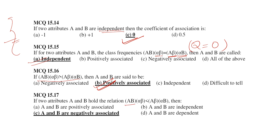If AB × αβ is less than Aβ × αB, then the attributes are negatively associated. These were all the questions on coefficient of association Q, which ranges from -1 to +1, and the different association conditions. Please first watch the Association of Attributes class, then practice these questions. I hope you liked this session — please like, share and subscribe. Bye-bye.